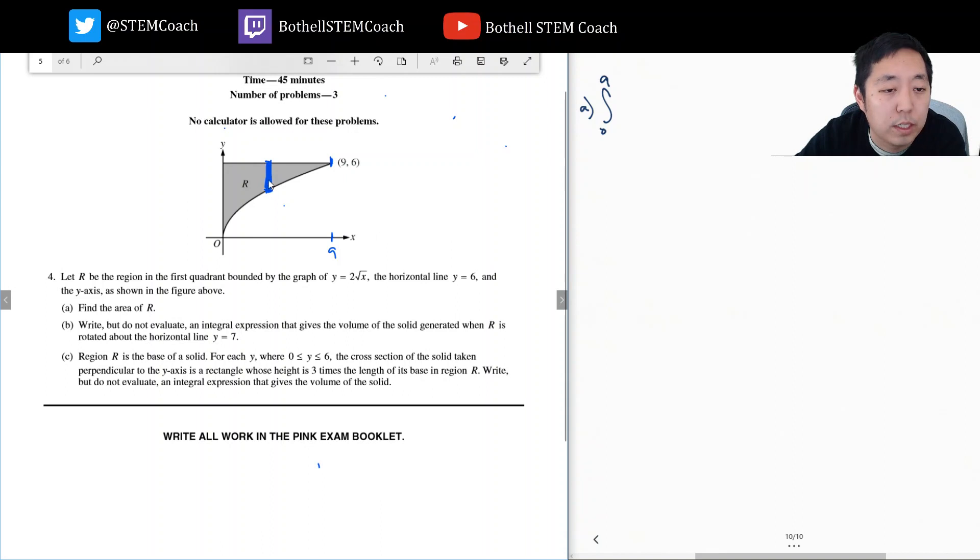Think of this as a representative rectangle. The height of this rectangle is 6 minus this function, 2 root x.